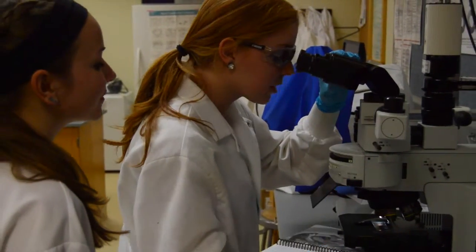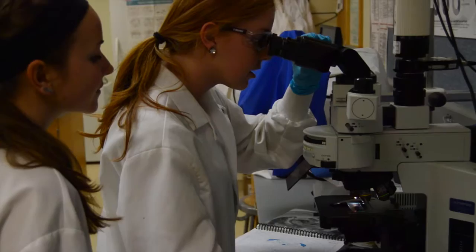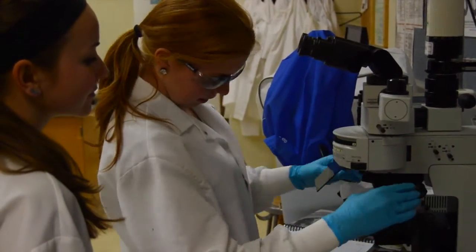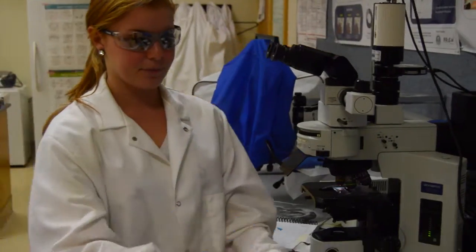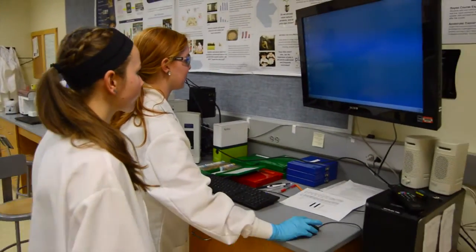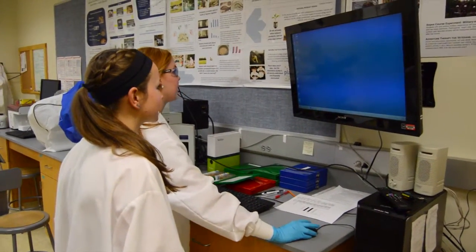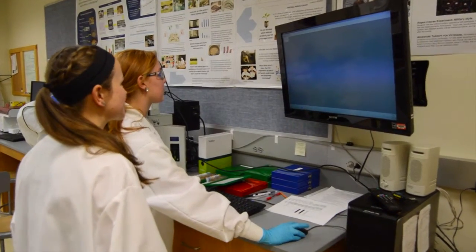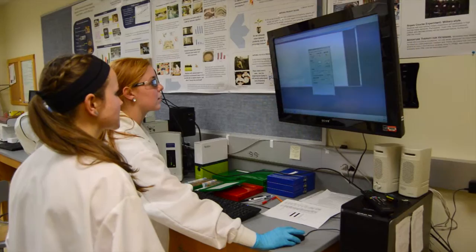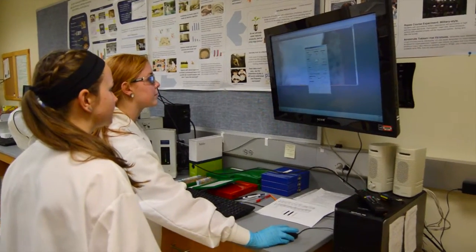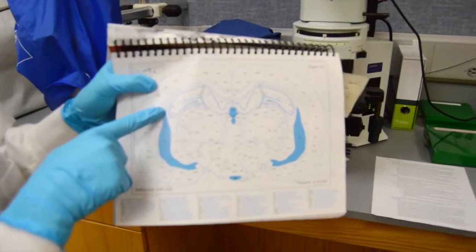The next step in counting neurons is neuroquantification, which uses computer software to output neuron counting and neuron size. Now that the slides are ready to be analyzed, set up the microscope, camera, and computer to start recording the data. Here, Q Capture, Paint, and ImageJ software are used to count the number and size of neurons in a specified brain region determined by the research instructor.